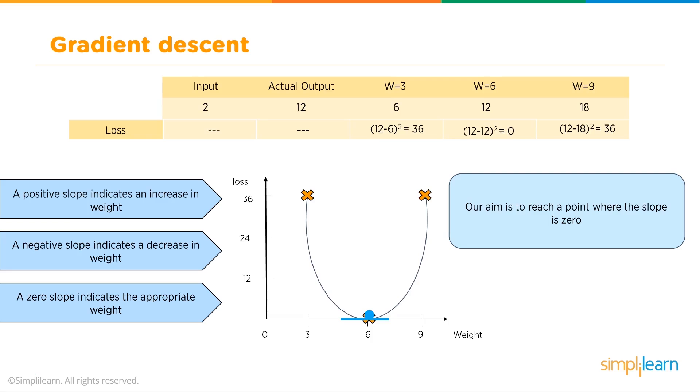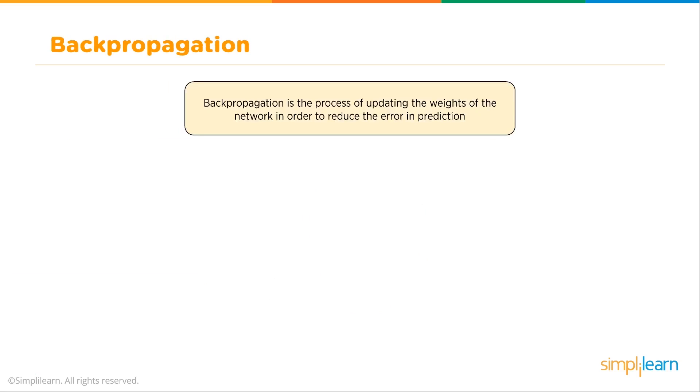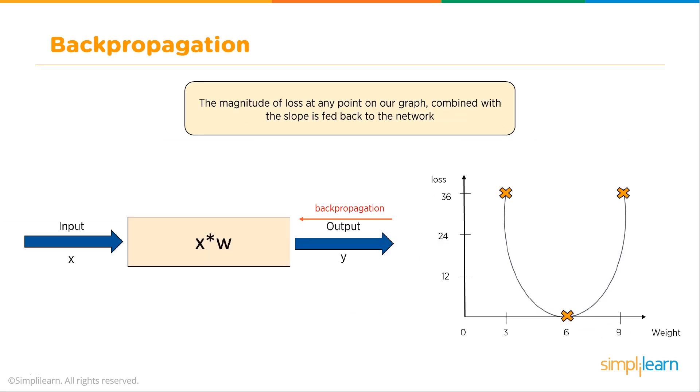Once we're talking about gradient descent, we're talking about finding the bottom of that curve even if it doesn't go all the way to zero. So how do we apply that to our neural network? We use backpropagation. Backpropagation is a process of updating weights of the network in order to reduce the error in prediction. The magnitude of loss of any point on our graph combined with the slope is fed back to the network. Here's our simple model with just one node of X times W. The input comes in, we have our X times W, the output.